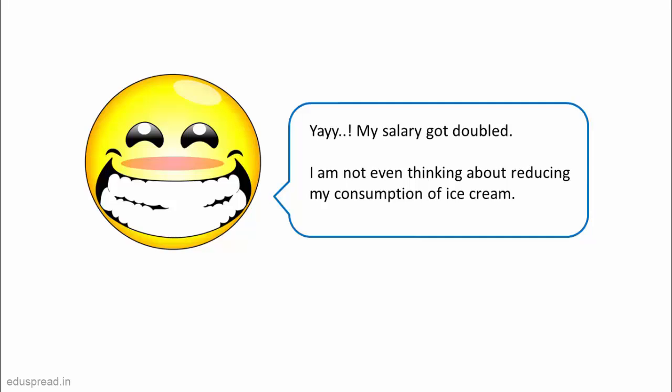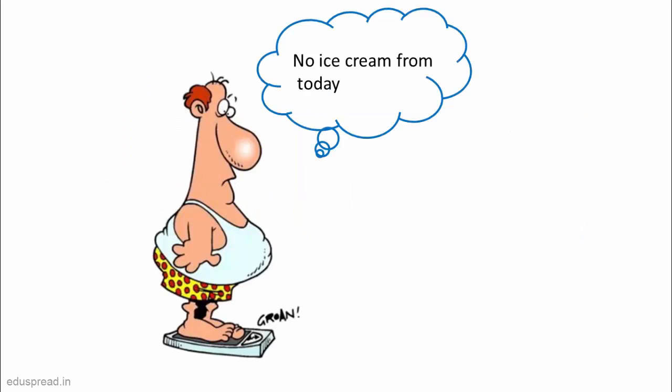Just like income, there are many other factors that may affect your demand behavior. For example, if someday you notice that you have put on a little weight, then you might decide to consume less ice cream even if the price of ice cream remains same. So basically, there are many other factors that affect your buying decisions apart from the price of the good.